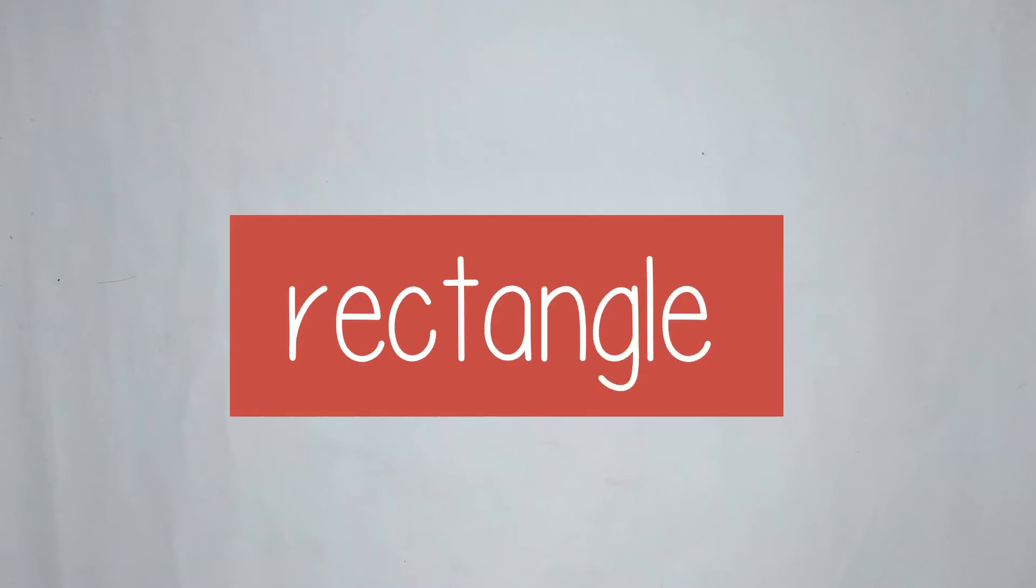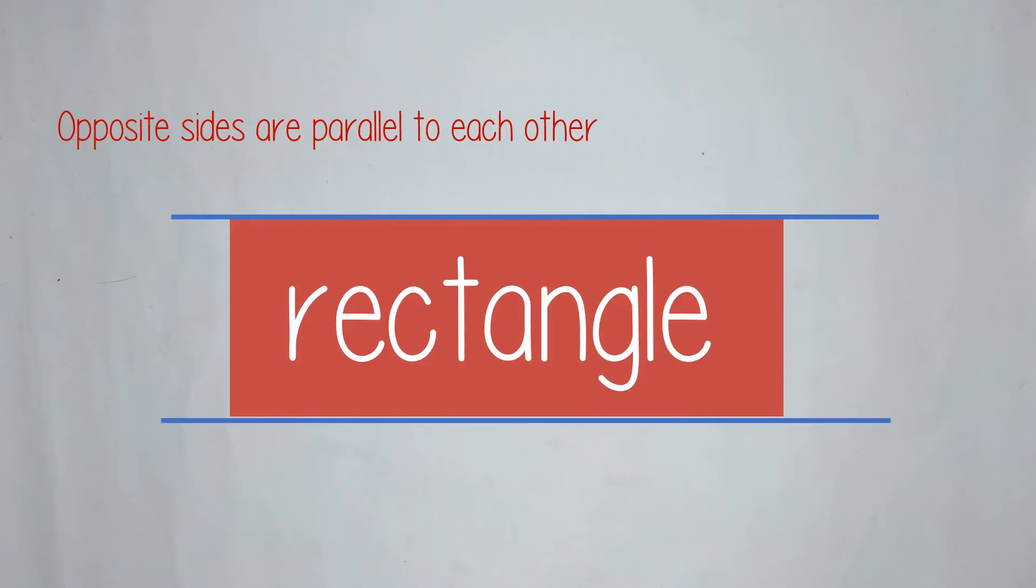A rectangle is a four-sided shape with opposite sides that are parallel to each other. So let us see. This side, the vertical side, is parallel to its opposite side. The horizontal side is also parallel to its opposite side. I have just shown you that the opposite sides are parallel to each other.